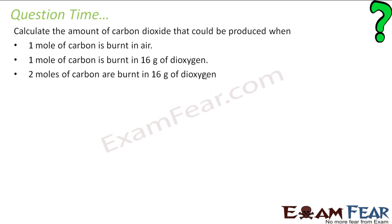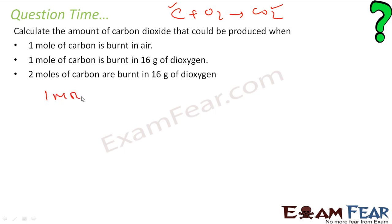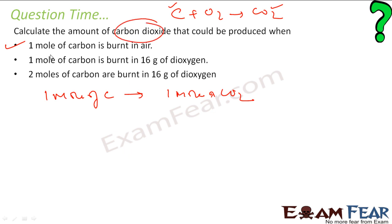The question asks you to find the amount of carbon dioxide produced when one mole of carbon is burnt in oxygen. The reaction is C + O₂ = CO₂. From this reaction, 1 mole of carbon needs 1 mole of oxygen to give 1 mole of carbon dioxide. So 1 mole of carbon gives 1 mole of CO₂ — that is the first answer.